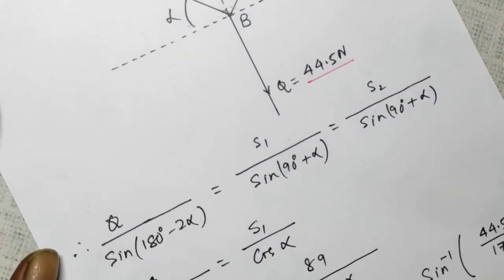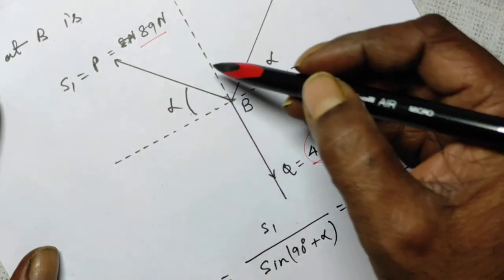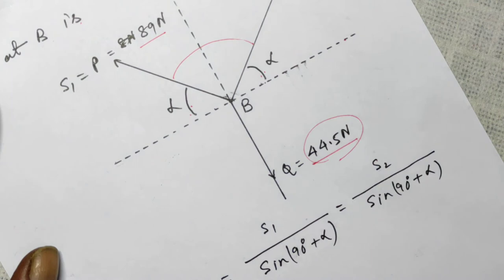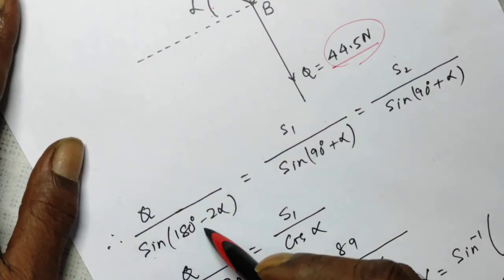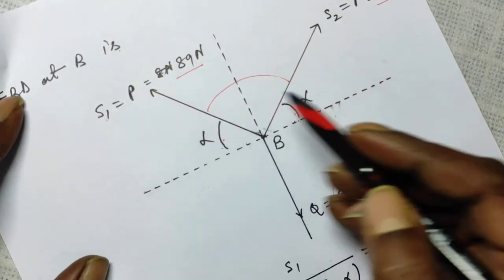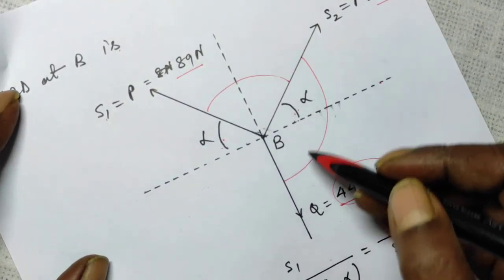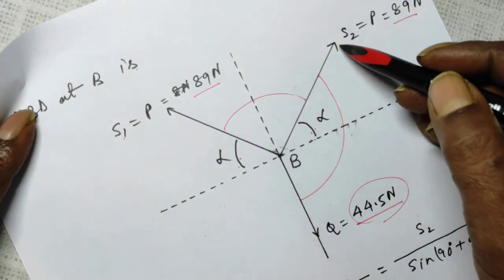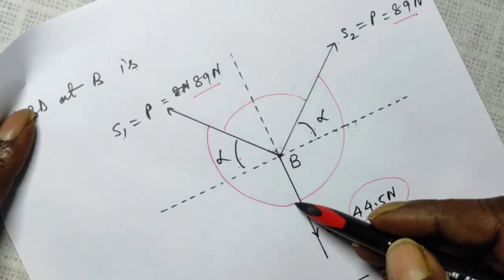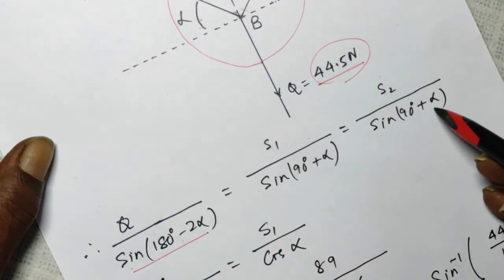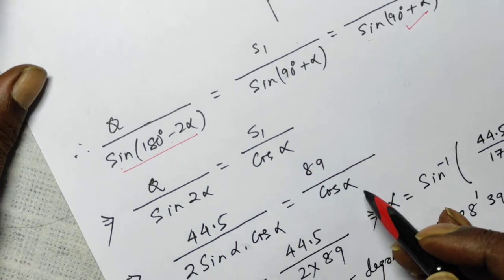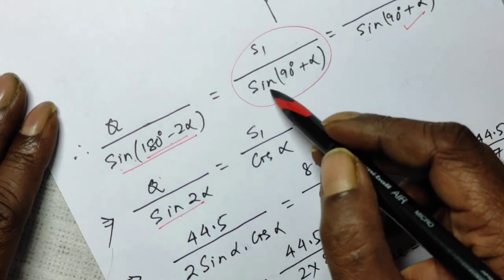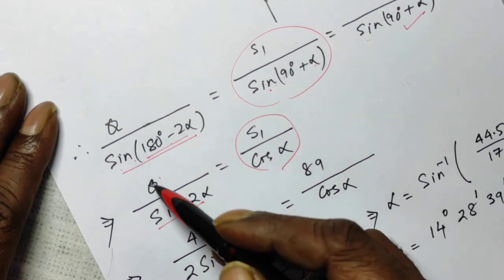Now apply Lami's theorem. Q over sine of the angle between S1 and S2: that angle is 180° − α − α = 180° − 2α. So Q over sin(180° − 2α) equals S1 over sin(90° + α), which equals S2 over sin(90° + α). From trigonometry, sin(180° − 2α) = sin(2α), and sin(90° + α) = cos(α).